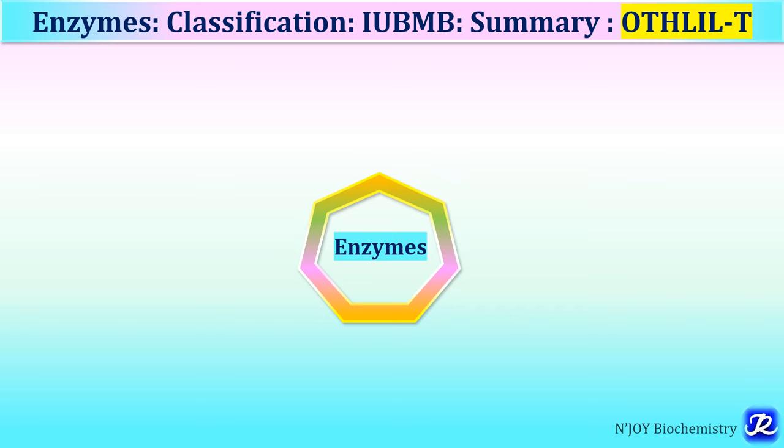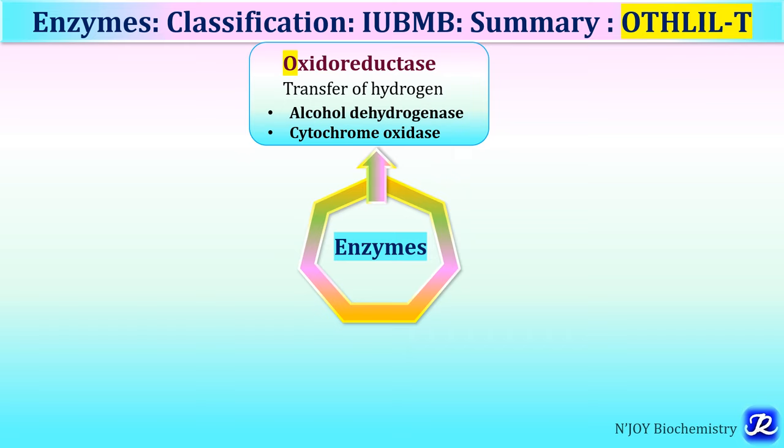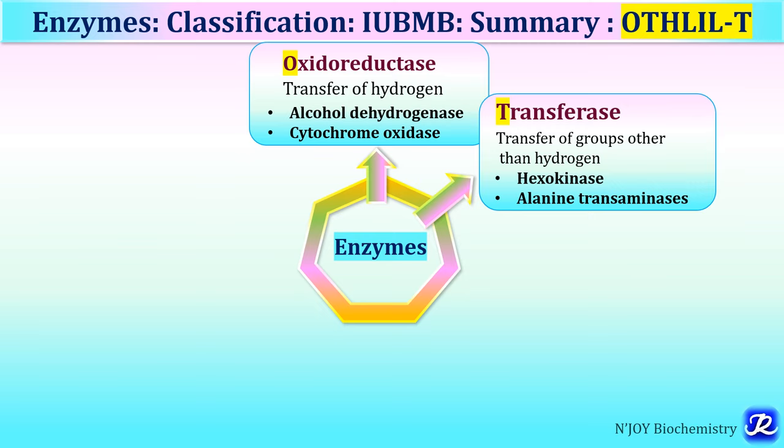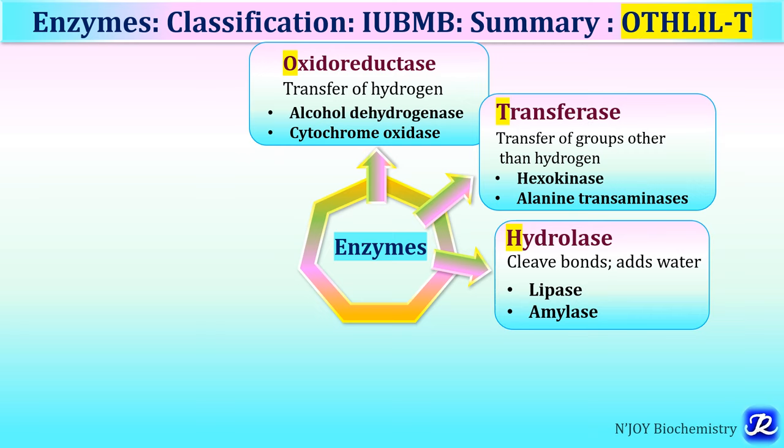EC1 oxidoreductases transfer hydrogen — examples: alcohol dehydrogenase, cytochrome oxidase. EC2 transferases transfer groups other than hydrogen — examples: hexokinase, alanine transaminase. EC3 hydrolases break bonds by addition of water — examples: lipases, amylases; all digestive enzymes belong to hydrolases.